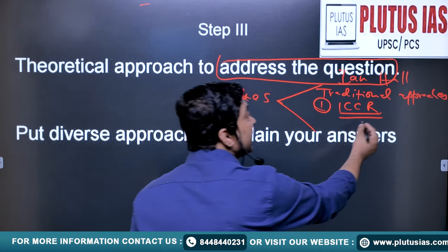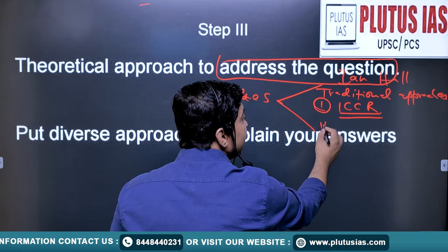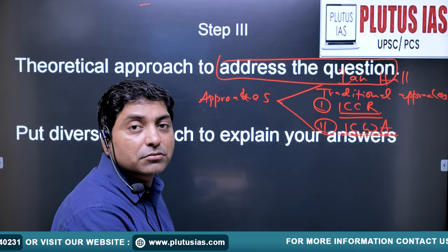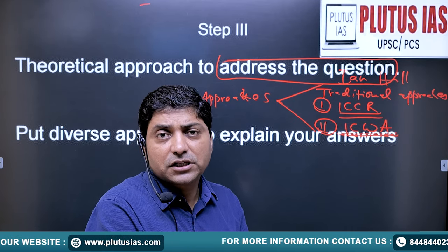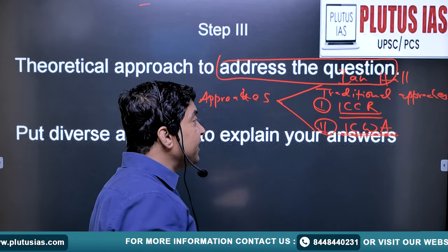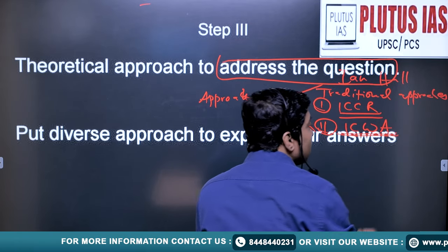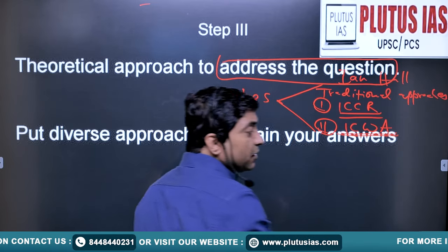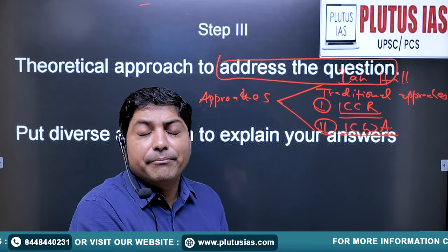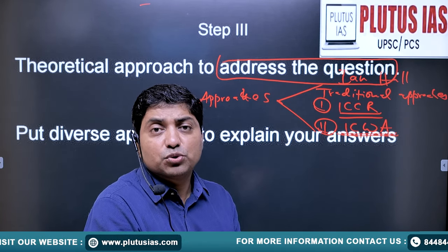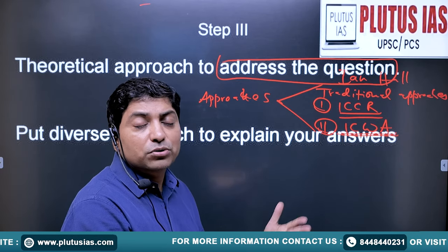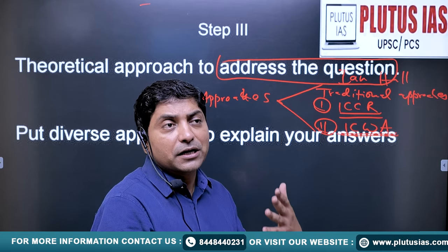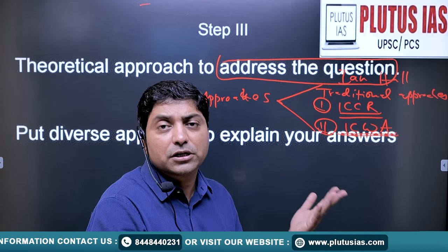ICCR is actually spreading India's soft power. Secondly is ICWA — the Indian Council for World Affairs. This is the research and intellectual arm of India, set up in 1943. It actually engages with multiple international institutions to discuss the multiple research questions going on around the globe.